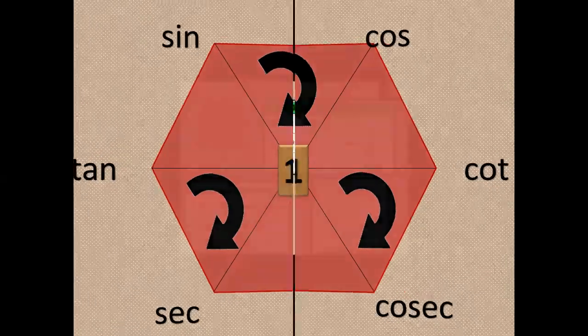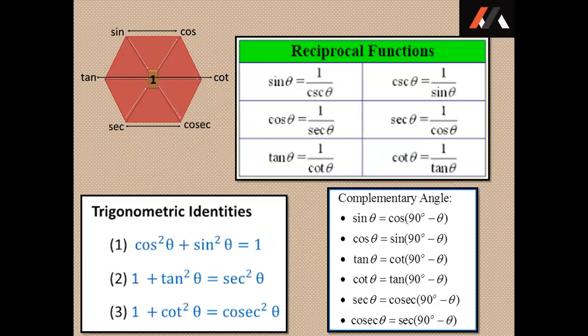Now let us revise. We learnt that sin and cosec, tan and cot, sec and cos are all reciprocal to each other respectively. That means: sin theta is equal to 1 by cosec theta; cosec theta is equal to 1 by sin theta; cos theta is equal to 1 by sec theta; sec theta is equal to 1 by cos theta; tan theta is equal to 1 by cot theta; and cot theta is equal to 1 by tan theta. These are the reciprocals.